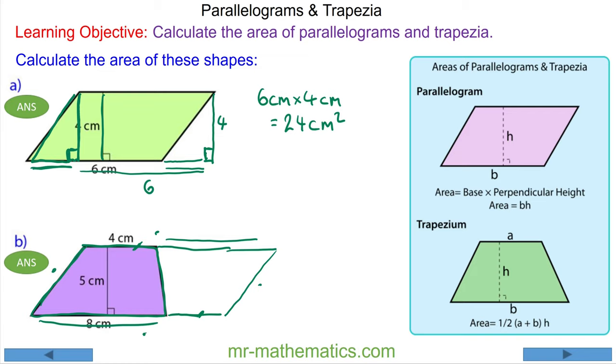Well, if this is 4, this must also be 4, so we have the base of 8 plus 4 multiplied by the height of 5. And this will tell us the entire area of this parallelogram.